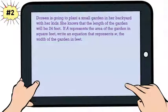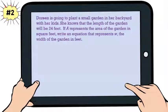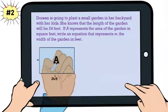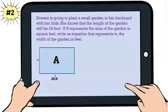Let's do another practice problem together. Doreen is going to plant a small garden in her backyard with her kids. She knows that the length of the garden will be 24 feet. If A represents the area of the garden in square feet, write an equation that represents W, the width of the garden in feet.